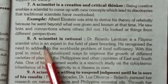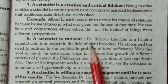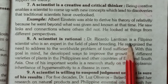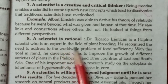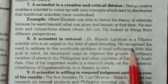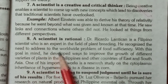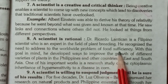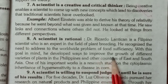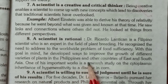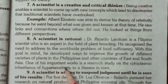Eighth, a scientist is rational. Dr. Ricardo Lentigan is a Filipino scientist who is an expert in the field of plant breeding. He recognized the need to address the worldwide problem of food sufficiency. With this goal in mind, he developed ways to improve the growth of different varieties of plants in the Philippines and other countries of East and South Asia.